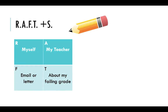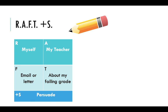Moving forward, we're going to look a little bit deeper at an example. For this example, the role is myself, my audience is my teacher, and I'm going to write an email or letter. Email might be better in 2020 because a letter can also be considered snail mail — but hey, some people still like to receive mail in their mailbox. The topic is about my failing grade, and in my plus S, I really need to persuade my teacher to help me out because I'm obviously failing and I need to improve my grades.